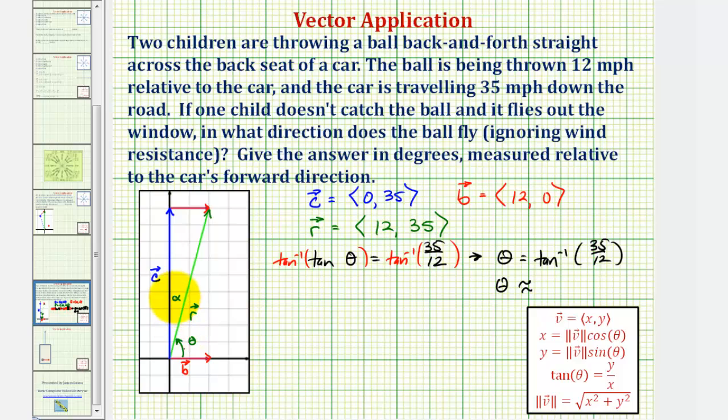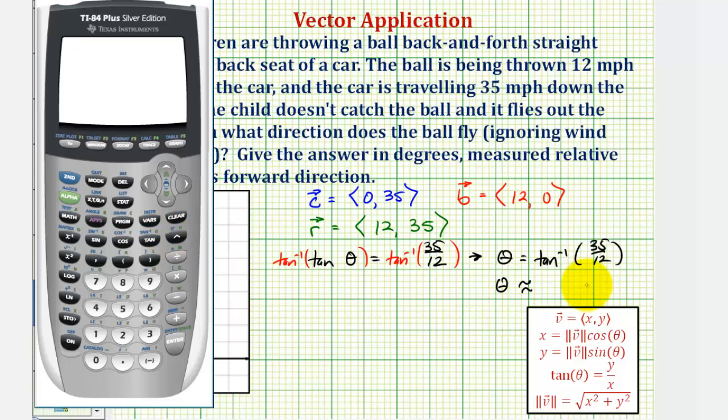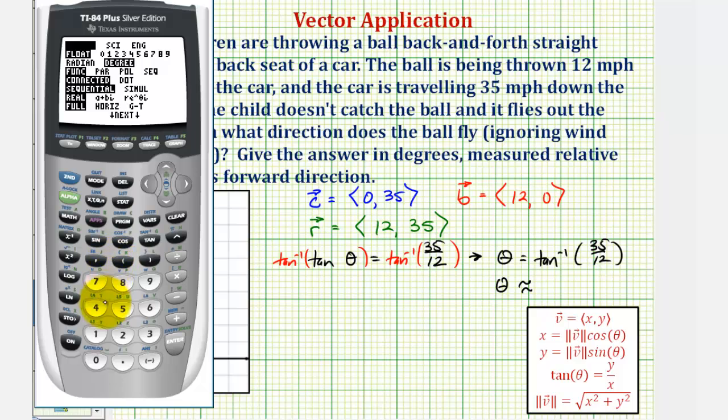Now we can go to the calculator and determine theta, but notice we're not looking for theta, we're looking for alpha, where alpha would be 90 degrees minus theta. Going to the calculator, let's make sure we are in degree mode. Press the mode key. We are in degree mode. Go back to the home screen. Press second tangent for inverse tangent, 35 divided by 12. Theta is approximately 71.0754 degrees.